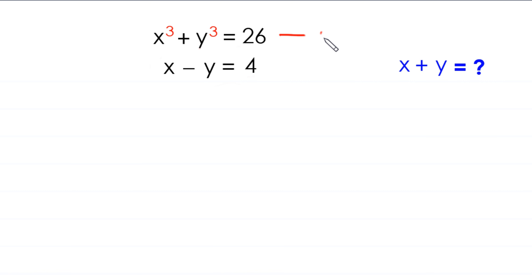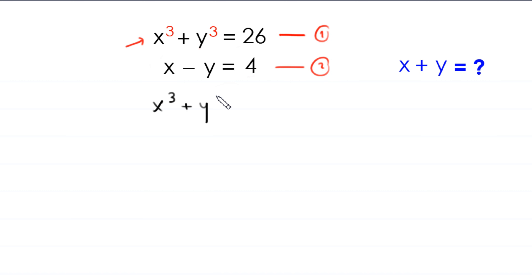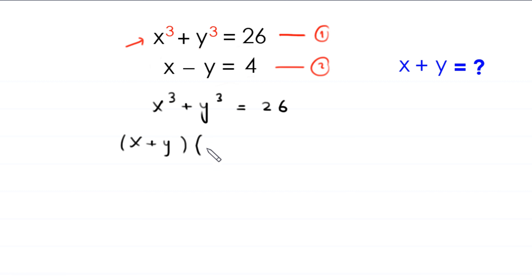Let us call this equation 1 and this equation 2. We start from equation 1: x cubed plus y cubed is equal to 26. This x cubed plus y cubed can be factorized as x plus y times x squared plus y squared minus xy, equal to 26.